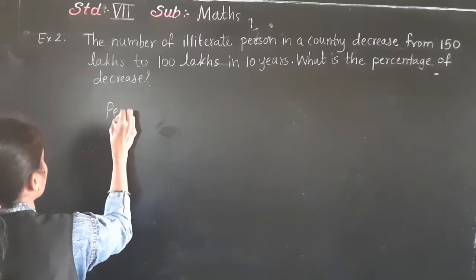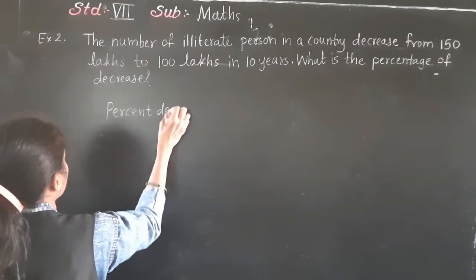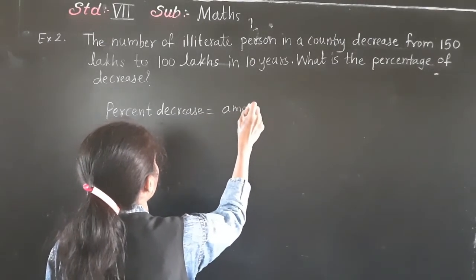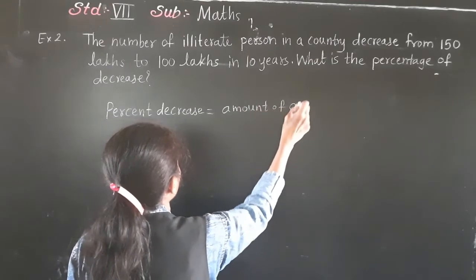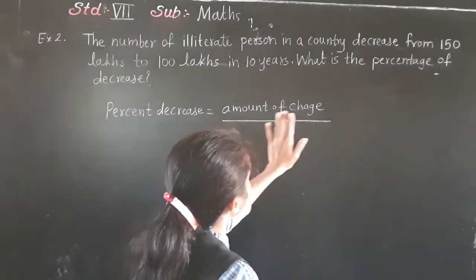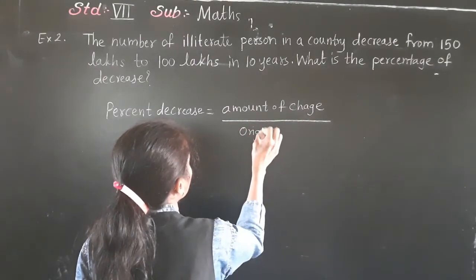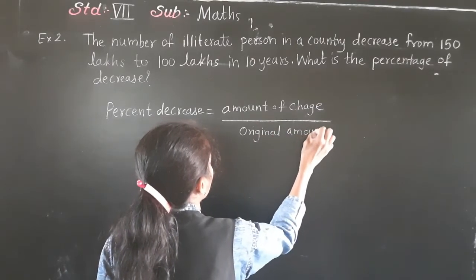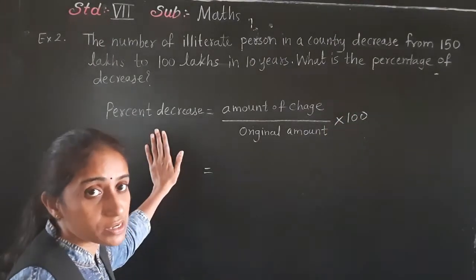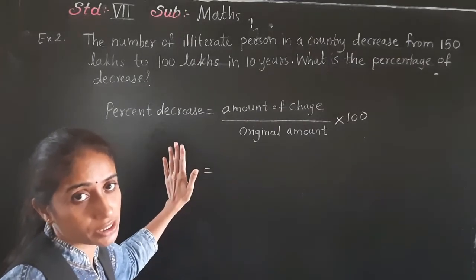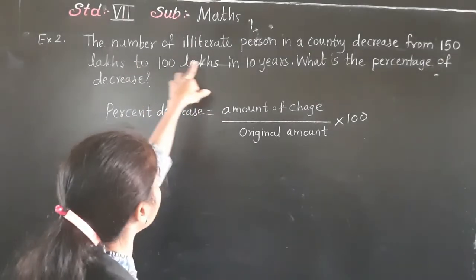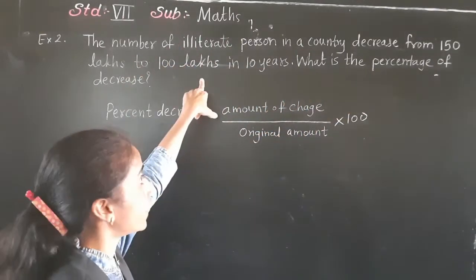So now let's write the formula first. Percent decrease is equal to amount of change upon original amount, multiplied by 100. We have to find how much percent it decreased. Amount of change: the population decreased from 150 lakhs to 100 lakhs.